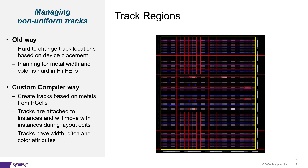Custom Compiler provides multiple solutions to overcome these challenges. The tool creates tracks based on metals from the P-cells, so if you place devices and move them to a new location, tracks move with the instance. Tracks come with width, color, and other attributes, so layout engineers can keep working in the same productive way they always have without retraining themselves to learn these complex requirements.